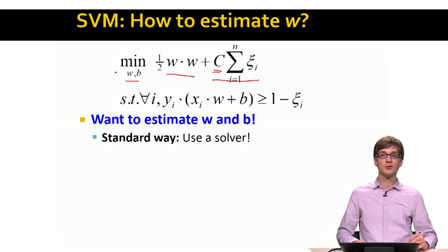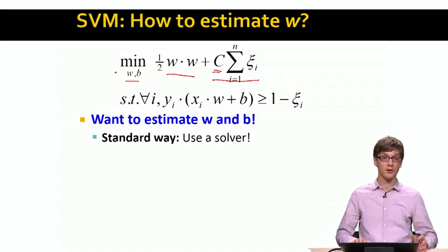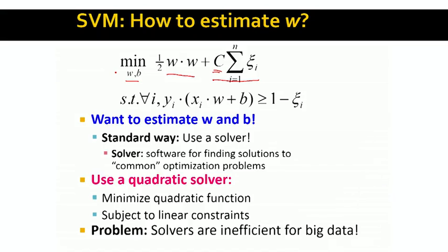A standard way to do this would be to use a solver — a mathematical software package where we write down the structure of our optimization problem and the software solves it for us. Our optimization problem requires a quadratic solver, because w is multiplied with itself, making this a quadratic objective function. However, the problem is that these solvers are generally slow, because they are built for general quadratic problems.